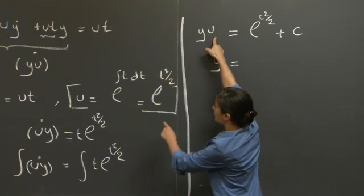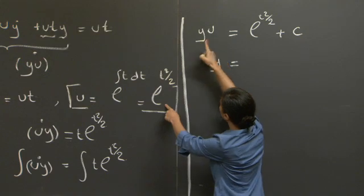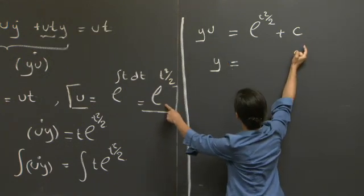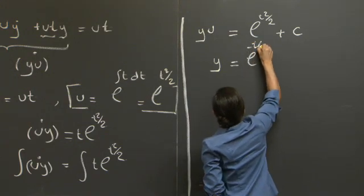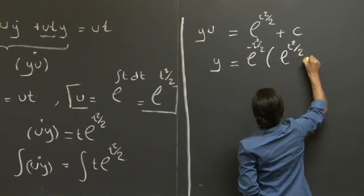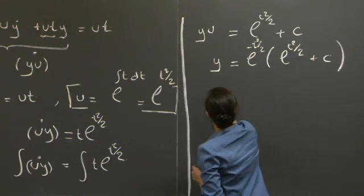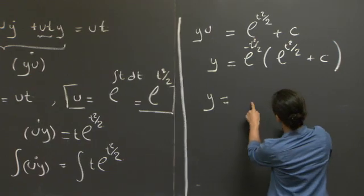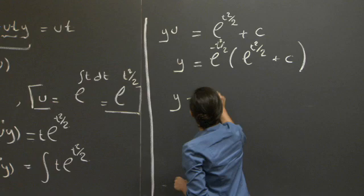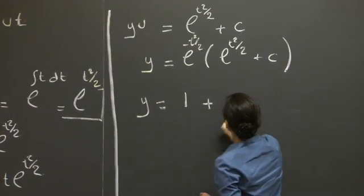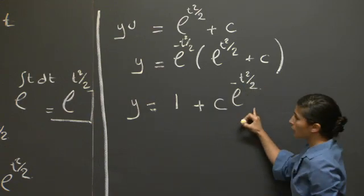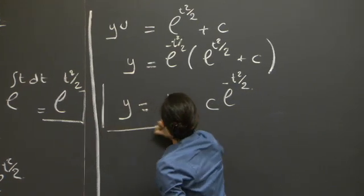We then find our solution by dividing by u, which is e^(t²/2) — equivalently, multiplying both sides by e^(-t²/2). This gives us e^(-t²/2)·e^(t²/2) = 1, plus c·e^(-t²/2). So that's our general solution.